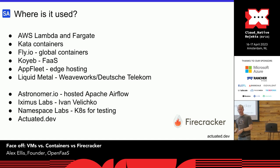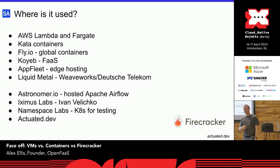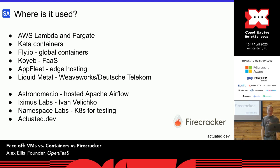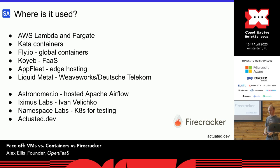In terms of users of this technology: AWS is using Firecracker in Lambda and also in their Fargate serverless containers product. Kata Containers is an open-source project that helps you run micro VMs more like a container — you can configure Kubernetes to eventually run a micro VM instead of runc. Fly.io is trying to create a CDN for containers; even though you provide a Docker image, they use Firecracker to run it, not Docker.